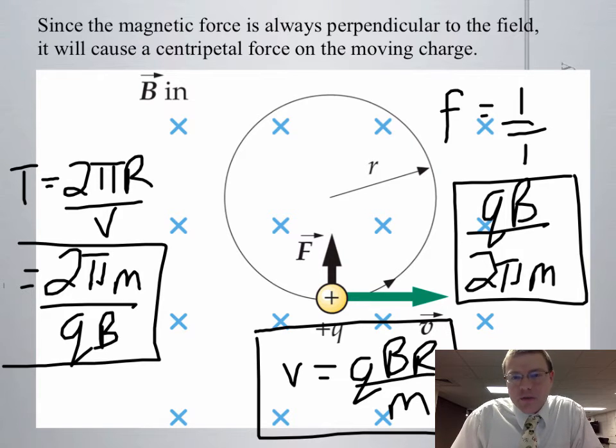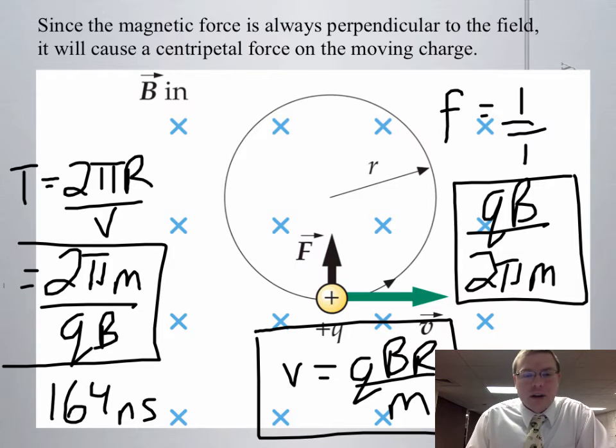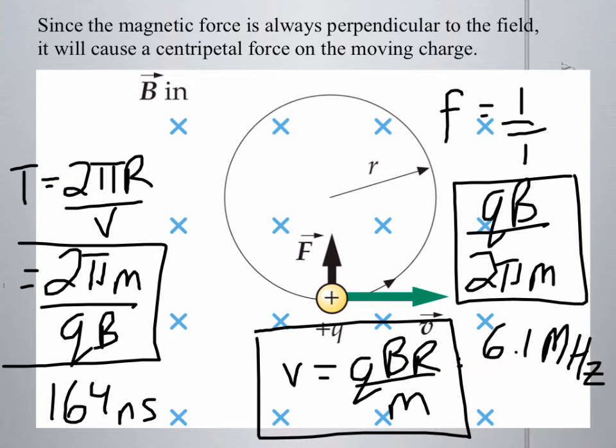So using the values we had before, we can see if you put in for your time period, you get around 164 nanoseconds. And if you want to know how many spins you'd make per second, that's 1 over the time period, and you get about 6.1 million hertz. You orbit in that circle about 6.1 million times per second. We have a very small charge moving very quickly, and it's allowed to zip around that circle at these frequencies.